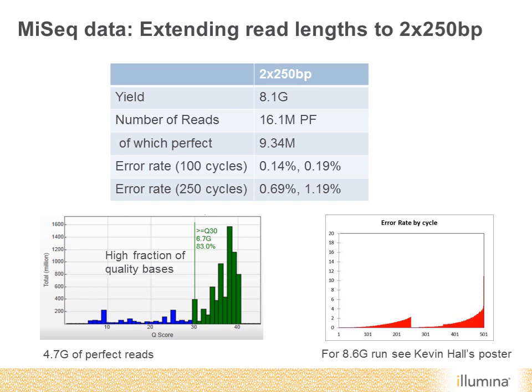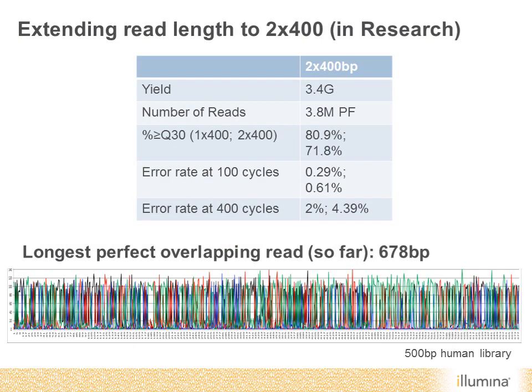In the overall run, 83% of bases were greater than or equal to Q30, with 4.7 gigabases of perfect reads. We've also been extending read length further than 250, and this slide shows our latest update pushing read length out to paired 400 base reads.